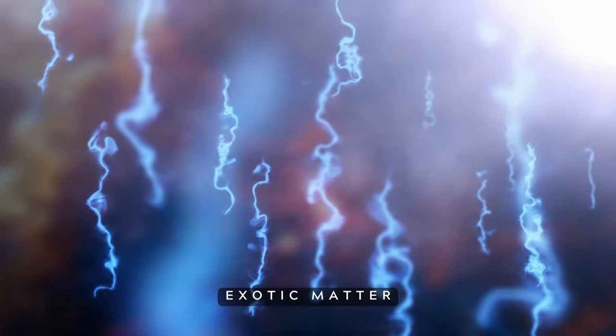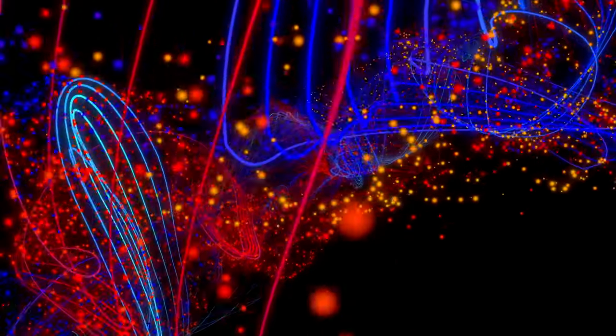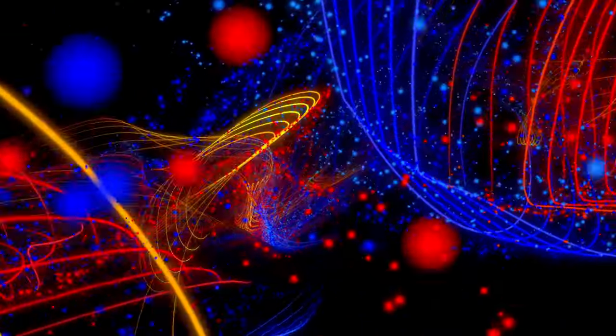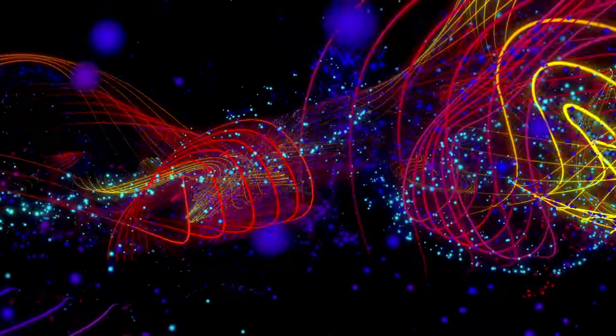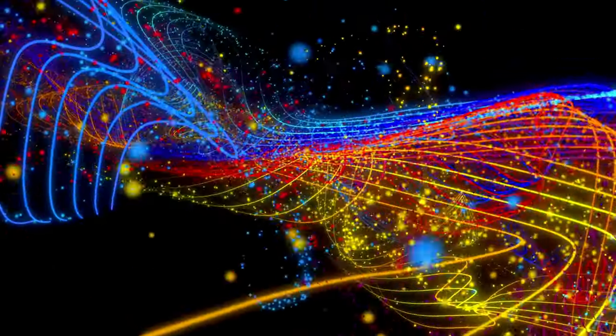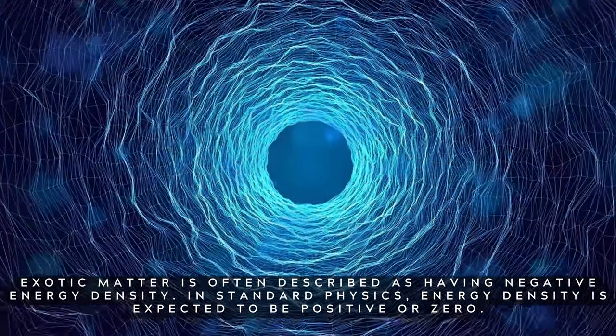Five: Exotic matter. Exotic matter is a theoretical concept in physics that refers to a hypothetical form of matter with peculiar properties not found in ordinary matter. It is often discussed in the context of certain theoretical models, such as general relativity and quantum field theory, to explore phenomena like wormholes, faster-than-light travel, and negative energy.